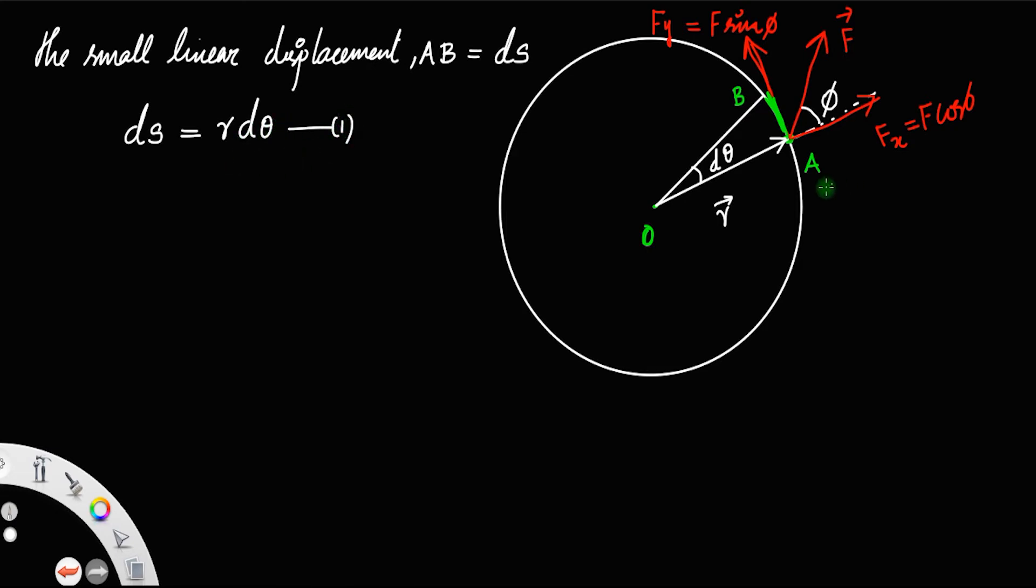We can find separately the work done by these two forces. Let us say the work done by the force Fx, we have, let us take that as dW1. Since the displacement is small, the work done will also be small. dW1 is equal to Fx dot the displacement AB.